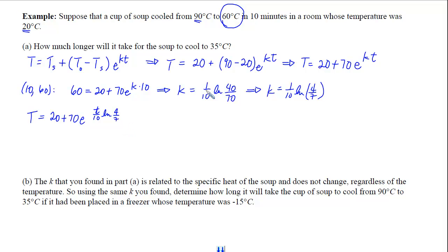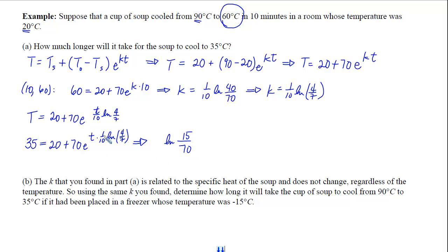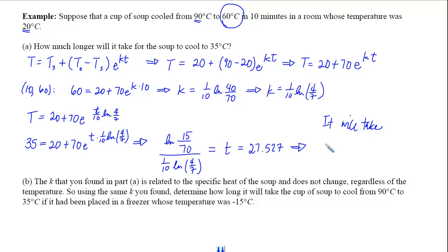Now I'm ready to answer the question. I want to know how long it takes to cool to 35 degrees, so I set the temperature equal to 35 and solve for t. Subtracting 20 gives 15, dividing by 70, taking the natural log of both sides, then dividing by the exponent coefficient. The calculator gives a time of 27.527 minutes. But the question asked how much longer after the soup already cooled to 60, so we subtract 10, giving 17.527 more minutes to cool to 35 degrees Celsius.